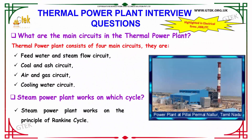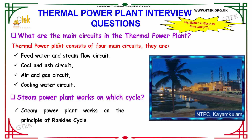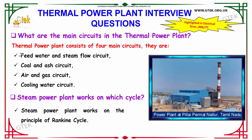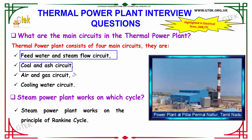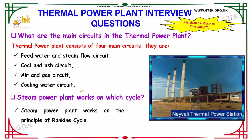The first question is: what are the main circuits in the Thermal Power Plant? The Thermal Power Plant consists of four main circuits. They are: feed water and steam flow circuit, coal and ash circuit, air and gas circuit, and cooling water circuit. These are considered to be the circuits in the Thermal Power Plant.